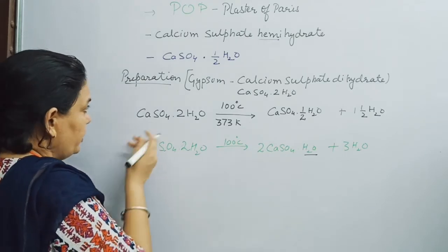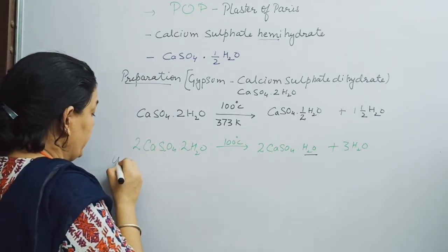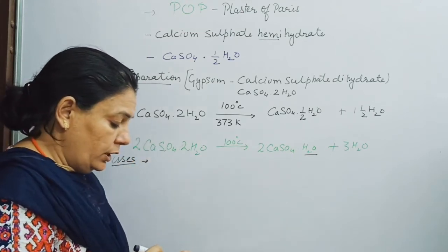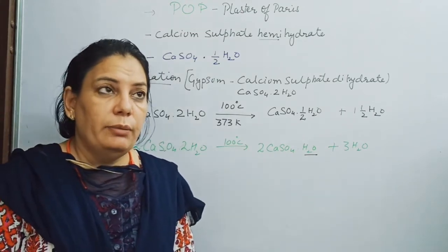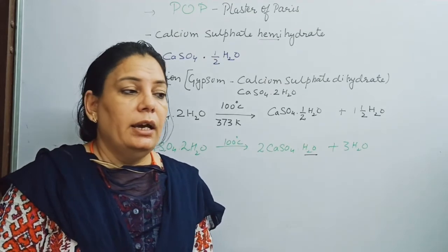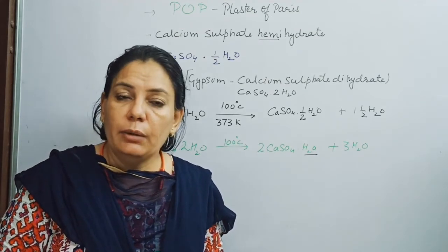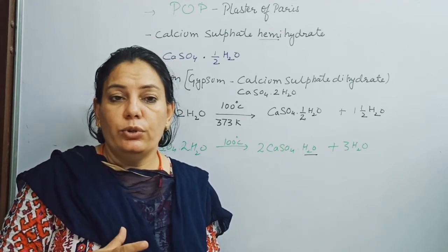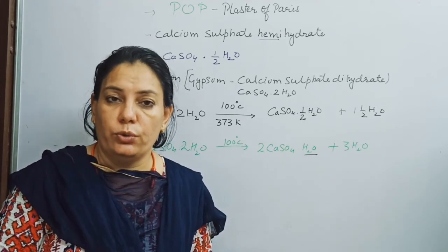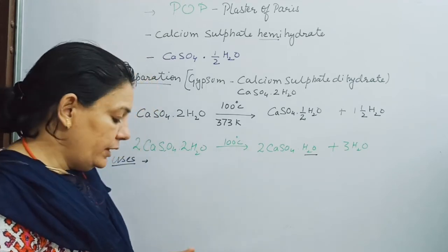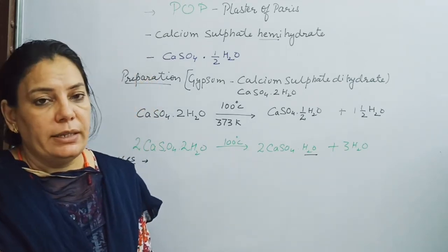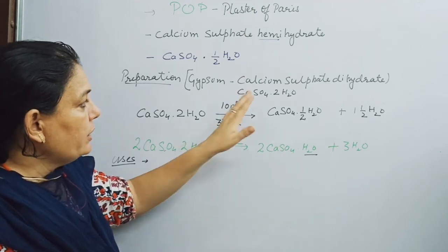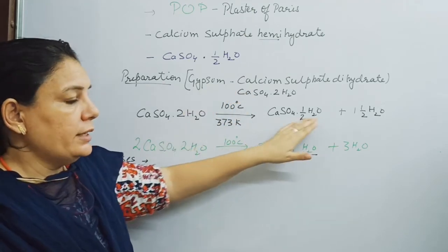Some uses of Plaster of Paris: it is used in making statues, in making decorative ceilings and rooftops, in making toys, and in medical purposes — doctors use it to support fractured bones. So these are the various uses of Plaster of Paris. It is also possible to make Gypsum from Plaster of Paris again.